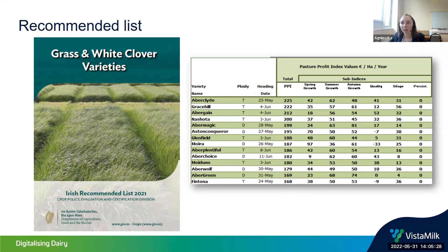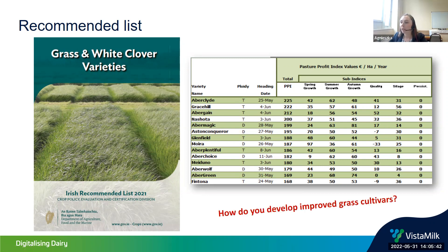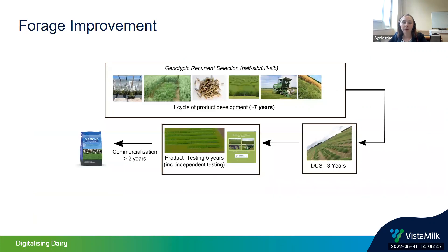Obviously if you are breeding and developing new cultivars of perennial ryegrass, you would like to have your variety on the recommended list and ranked very highly, so that farmers will be buying your seed. But how do you develop improved grass cultivars? We have a whole system for this called forage improvement.